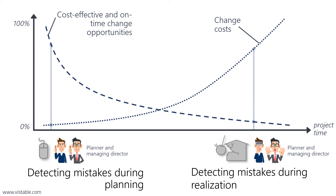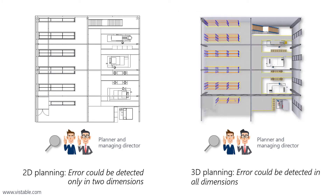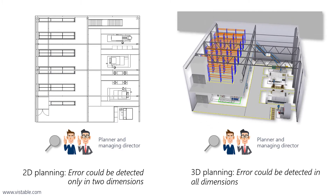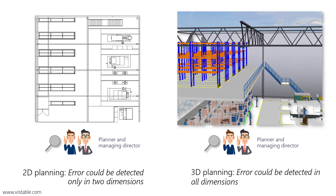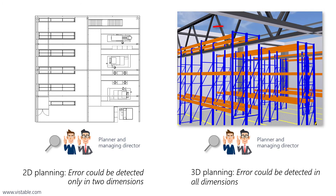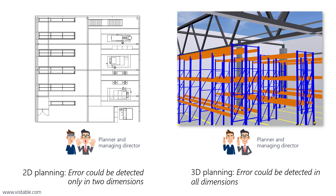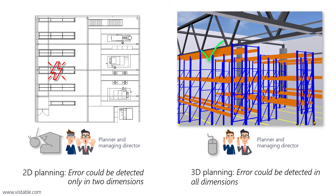Follow-up costs due to schedule delays can be even higher. That is why it is very important to identify or avoid possible errors as early as possible. A three-dimensional model is much closer to reality than a two-dimensional model, which is why errors in 3D planning can be detected and corrected earlier. This reduces costs and shortens implementation times. Therefore 3D planning offers great advantages over 2D planning in terms of cost and on-time implementation. This is countered by the rumor that 3D planning is costly and complicated.